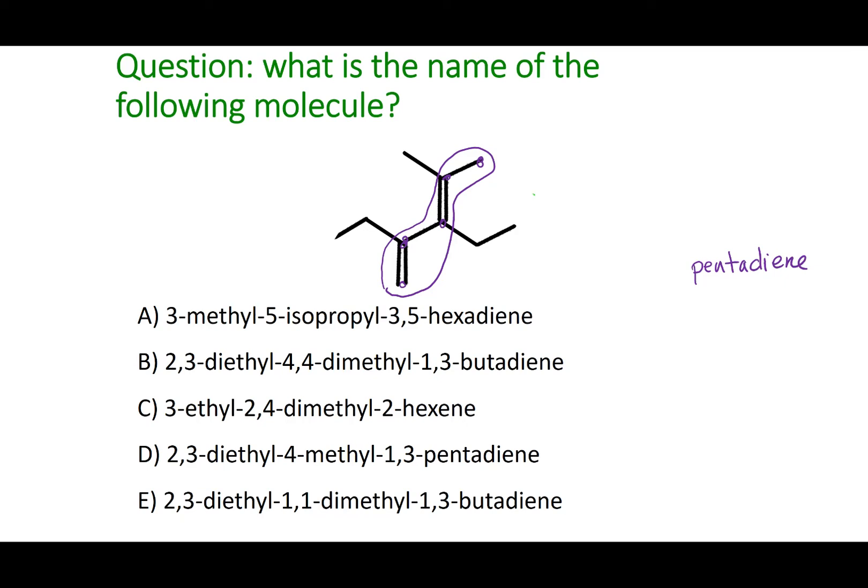Now I have to go ahead and number this chain. If I start here, my first double bond gets labeled as 1. If I were to number it the other way, 1, 2. So I'm going to start labeling this bottom to top because of the first point of difference. So 1, 2, 3, 4, 5. Now I see that my double bonds are on carbons 1 and 2 and then 3 and 4. So this becomes 1, 3 pentadiene.